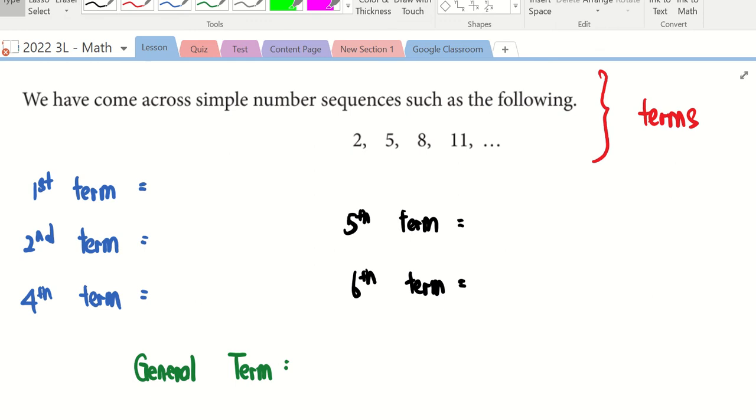We are coming to the last part, number pattern. As you can see, there are four numbers given in this pattern. The first number is number two. It is also known as the first term. So what is the value of the first term? It's number two.